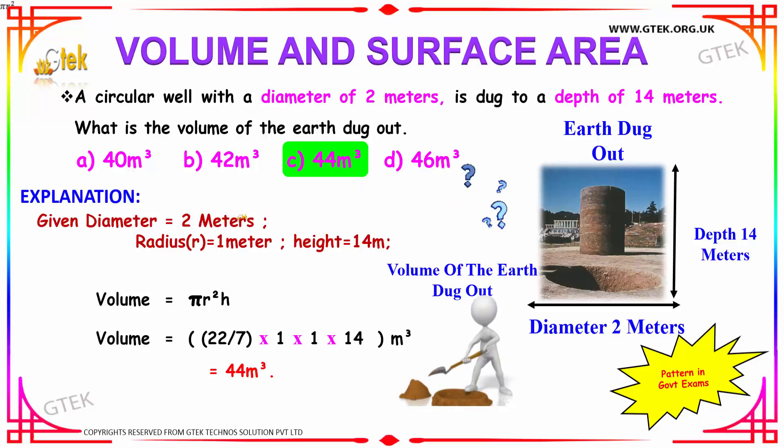They have given the diameter of the circular well to be 2 meters. So your radius will be obviously half of your diameter, that is nothing but 1 meter, and the height is given to be 14 meters.